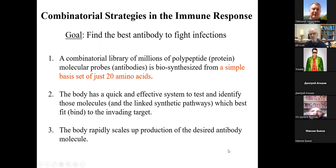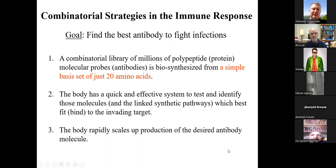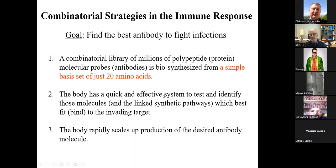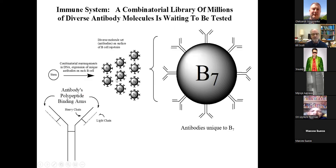Looking more closely at the antibody process: we have a combinatorial library of millions of protein molecular probes — the antibodies — biosynthesized by B cells from a simple basis set of 20 amino acids. This illustrates the huge numbers of compounds you can make from a very limited set of starting materials if you have a powerful synthetic pathway. Once this large collection of antibodies is synthesized, the body has a quick, effective way to test which antibody best binds the antigen.